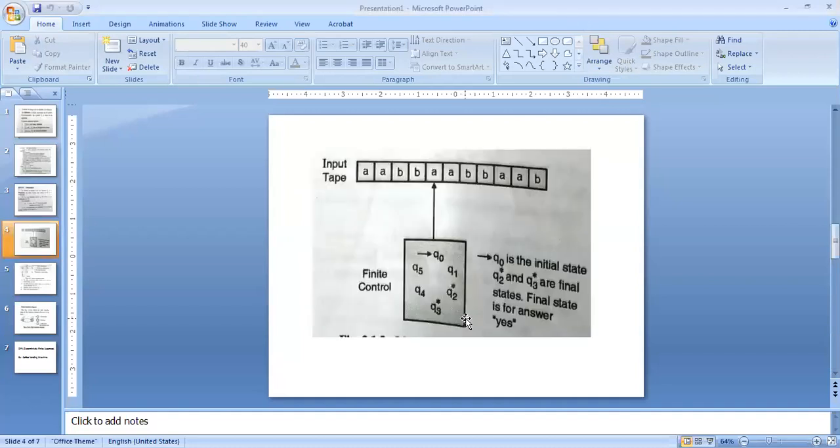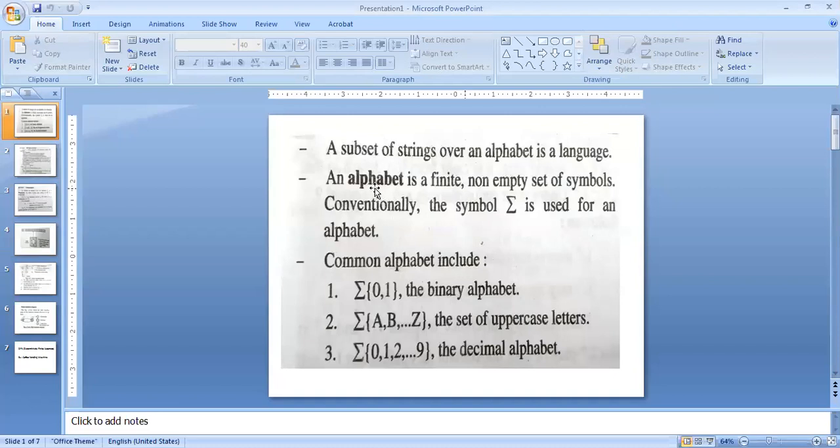So we'll revise the thing again whatever we have learned. We have learned called as alphabet, finite non-empty set of symbols with which we are making the language. So for binary language alphabet is zero comma one, sigma is alphabet or we can say inputs. For uppercase or the English language, inputs are A to Z. For decimal number, input are zero to nine.